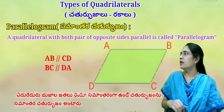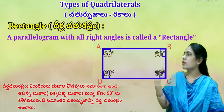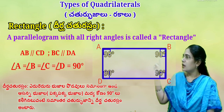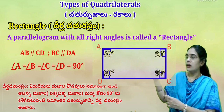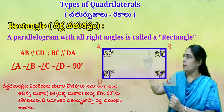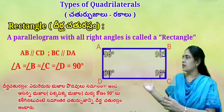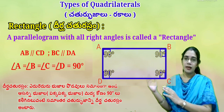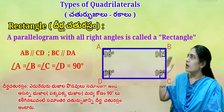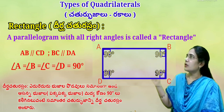Rectangle (Dirga Chaturastra): a parallelogram with all right angles is called a rectangle. Here, opposite sides are equal and parallel — AB is parallel to CD, and BC is parallel to DA. The angle between adjacent sides is 90 degrees, that is a right angle. Angle A, Angle B, Angle C, and Angle D all equal 90 degrees.